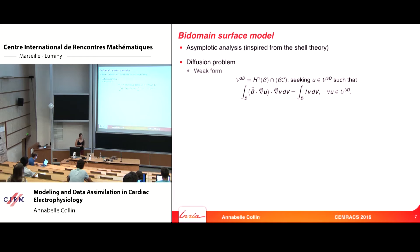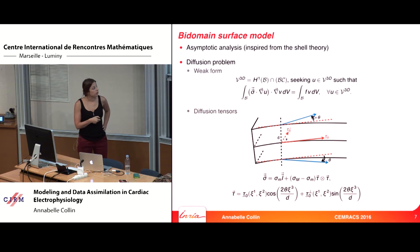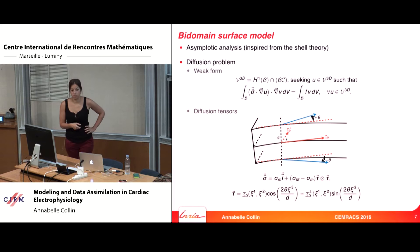I consider a diffusion problem in weak form. I need some assumptions on the variation of the fiber across the thickness. I call tau zero the main direction of the fiber, and I assume a linear variation of the fiber across the thickness. A fiber vector can then be decomposed into two parts: the component along T0, the mid-surface direction, and the component along the orthogonal of T0.